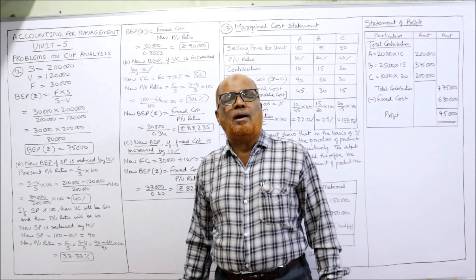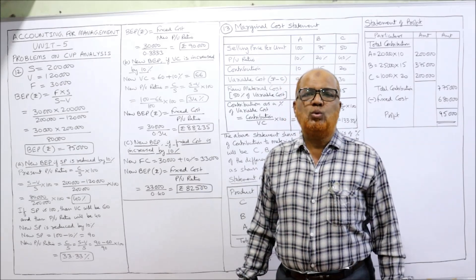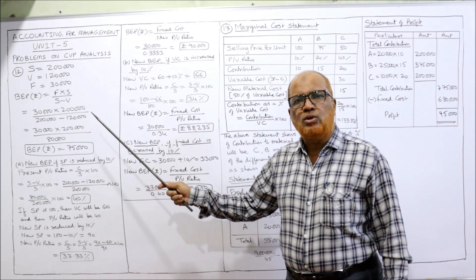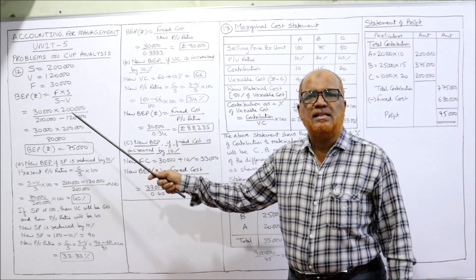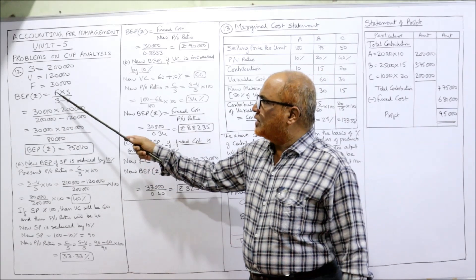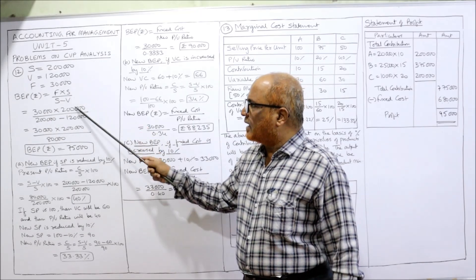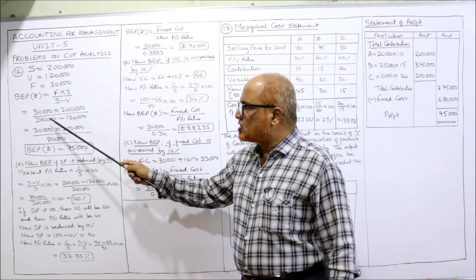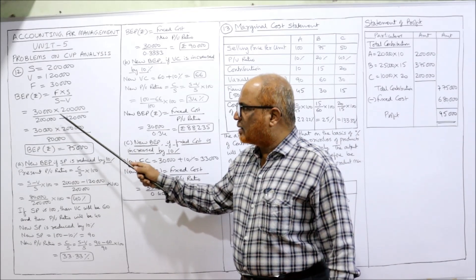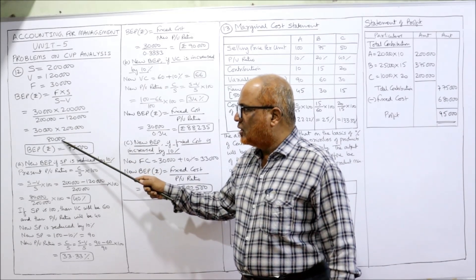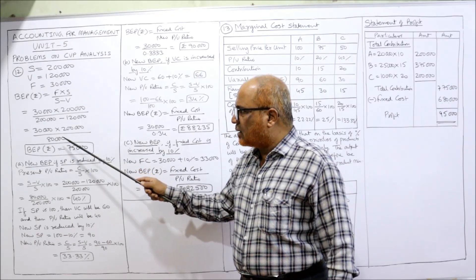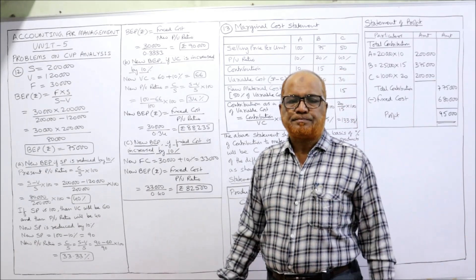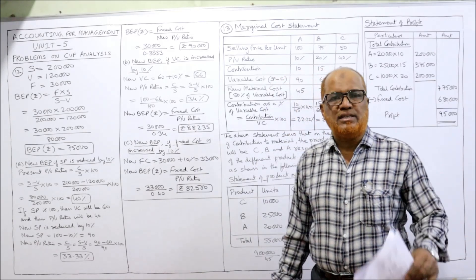We apply the formula: BEP = Fixed Cost × Sales ÷ (Sales − Variable Cost). Fixed cost is 30,000, sales are 2 lakh, variable cost is 1 lakh 20,000. So: 30,000 × 2,00,000 ÷ (2,00,000 − 1,20,000) = 30,000 × 2,00,000 ÷ 80,000 = 75,000. The present BEP is 75,000.